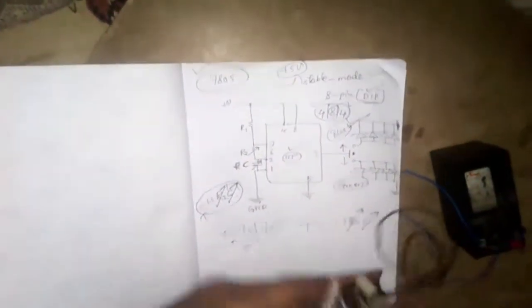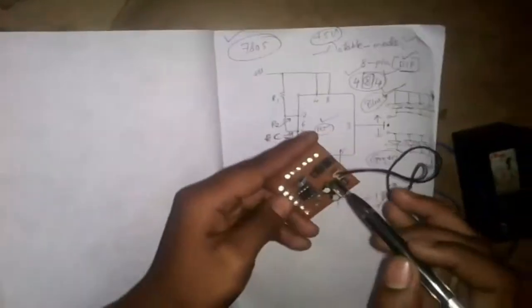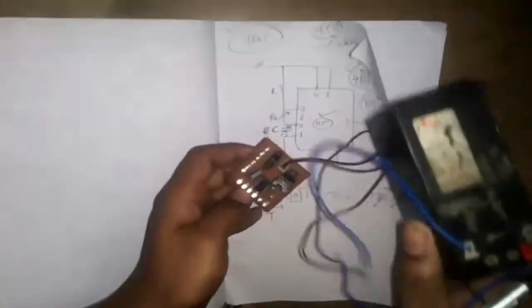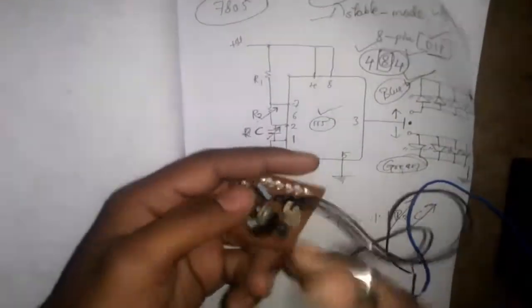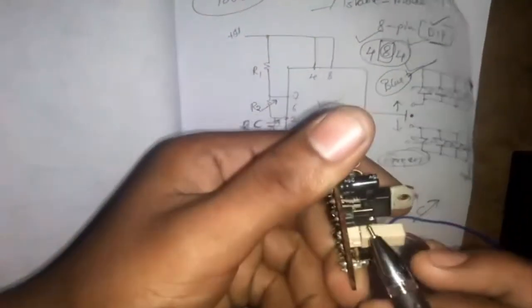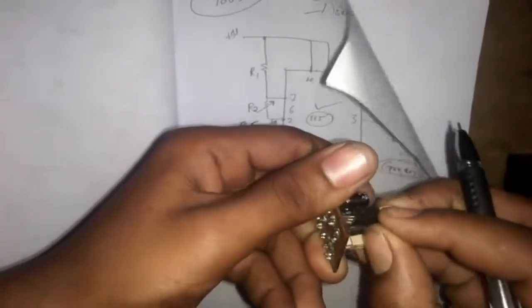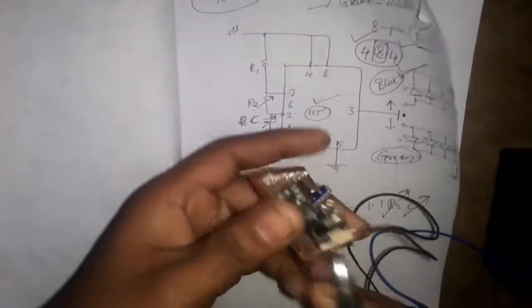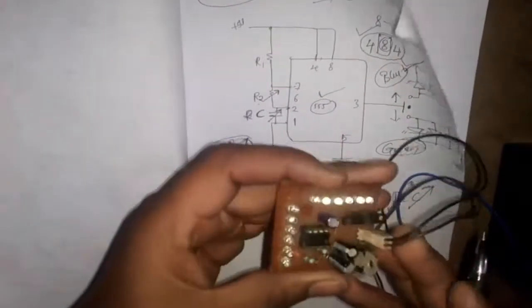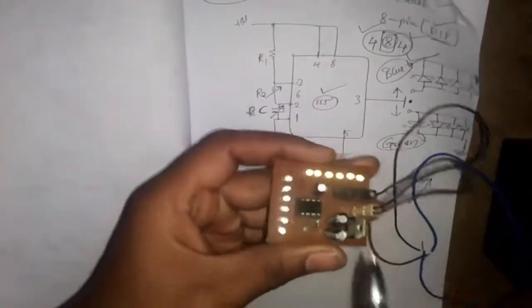This is my power supply through this battery, 12 volts battery. This is my switch. You can see here by taking down here you can connect to the other side. If you're connecting to other side it's on. If you're going to another side it becomes off.